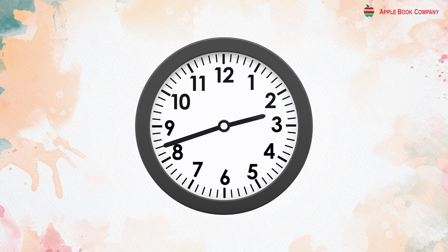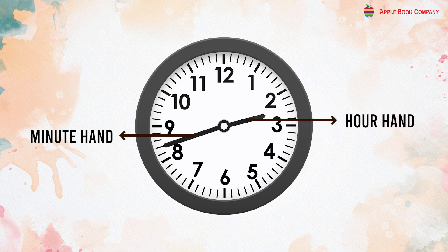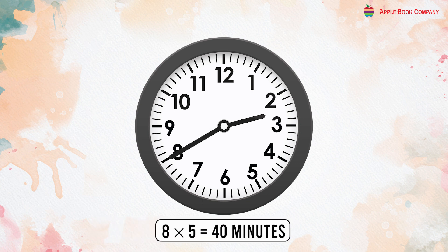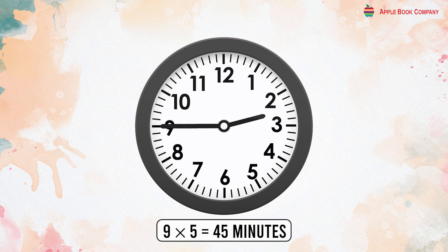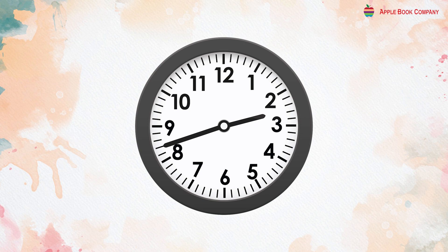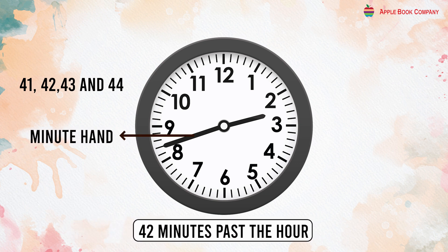In the figure, the minute hand is at 42, between the marks 8 and 9, and the hour hand has passed mark 2 and is between 2 and 3. So the time is 2:42. We count the minutes in 5s. When the minute hand is at 8, it is 8×5 = 40 minutes past the hour, and when the minute hand is at 9, it is 9×5 = 45 minutes past the hour. So between marks 8 and 9 lie the minutes 41, 42, 43, and 44. Because the minute hand is at the second mark, it is 42 minutes past the hour.